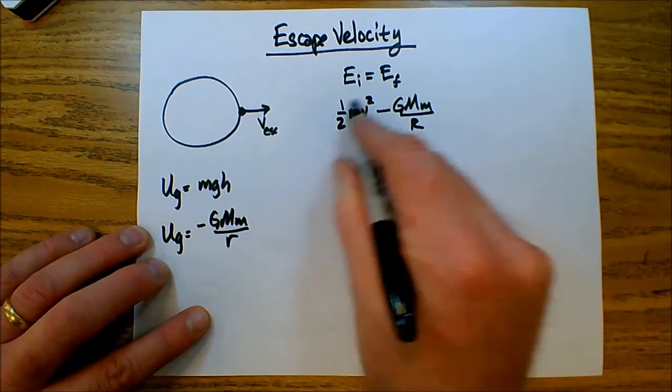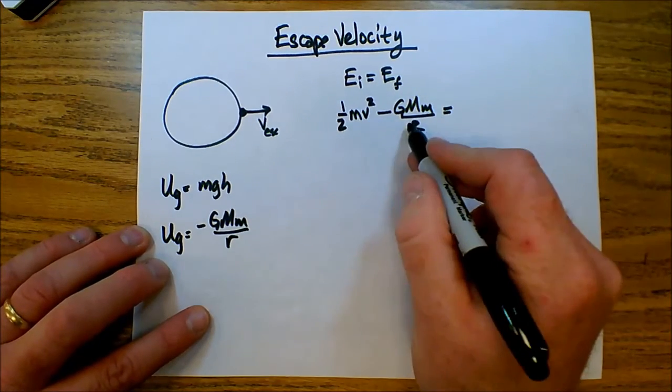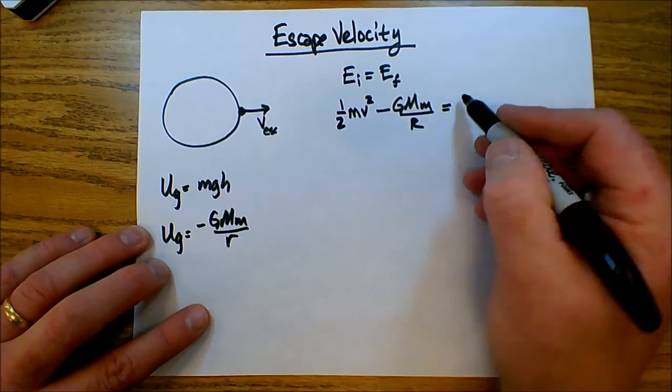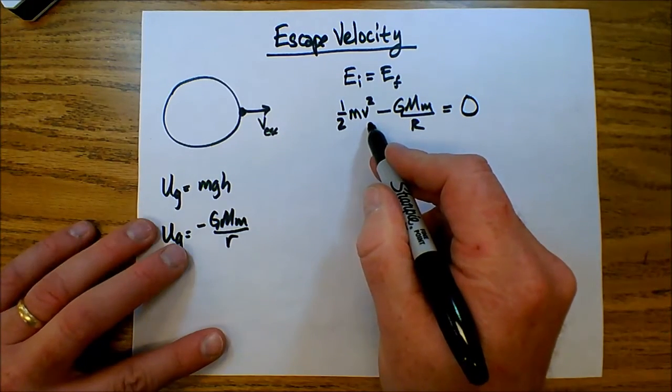That's our initial energy right there. And that is going to equal our final energy. We want our final kinetic to be zero. And we want our final gravitational to be zero. So basically, we're setting this equal to zero if we want this velocity to be fast enough to be what we call the escape velocity.